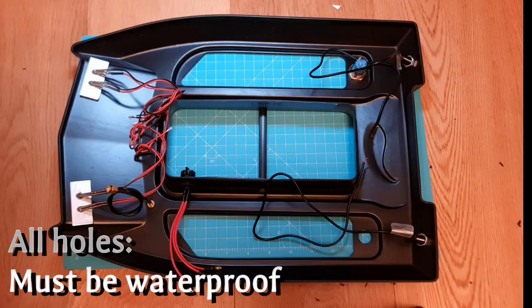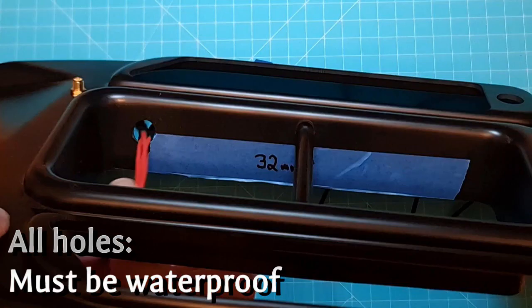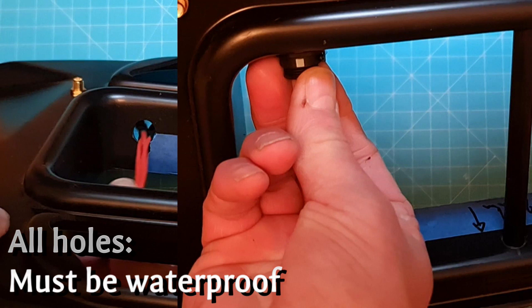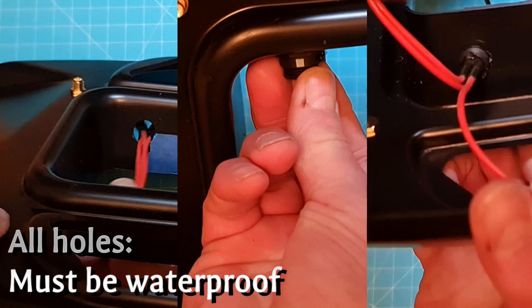And finally, it's time for our bait throw socket. We use the same principle here. Just push it through. Remember to put the white dot on the top so it's easy to mount later. And then from the inside, mount the nut and do all of the same waterproofing as you did for all of the other parts.